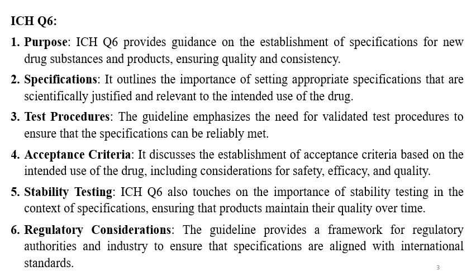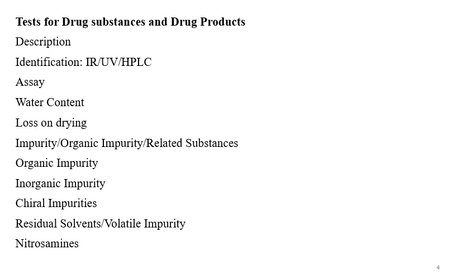For example, if you are working on a drug substance or API, or you are working on a drug product, this guideline will give you an idea regarding what quality parameters are required to be tested and what should be the acceptance criteria to meet safety, efficacy, and quality requirements. Let's start with the requirements — tests for drug substances and drug products.